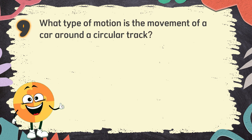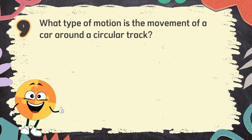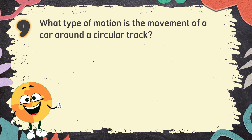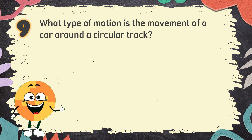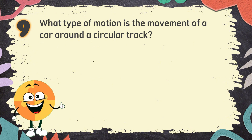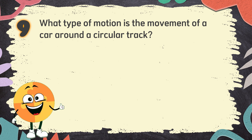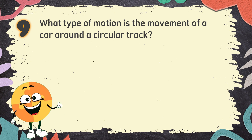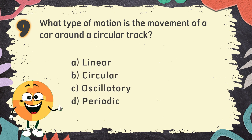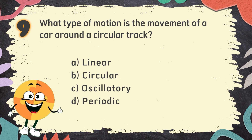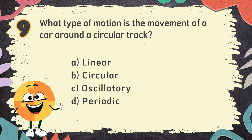Number 9. What type of motion is the movement of a car around a circular track? The choices are: A. Linear, B. Circular, C. Oscillatory, D. Periodic.